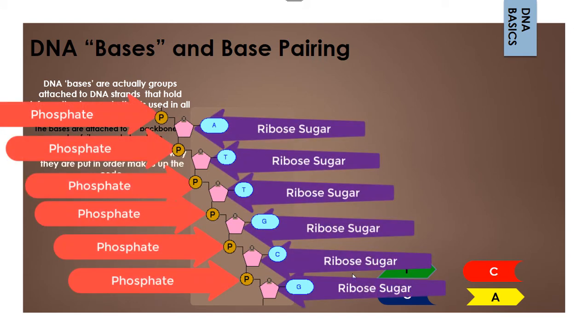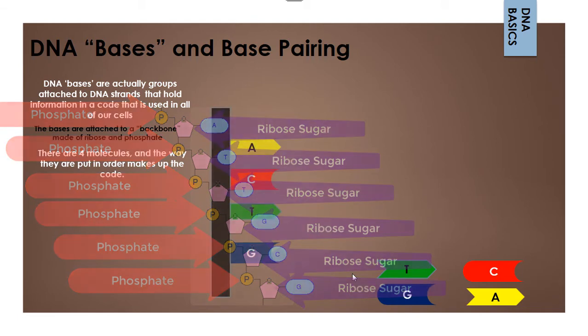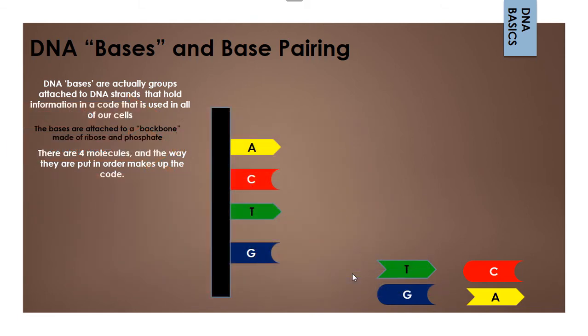And then, the way that they get put together, and we're talking about billions, three or four billion base letters in our DNA genome, the way they get put together is what makes up all of the things that make us us.